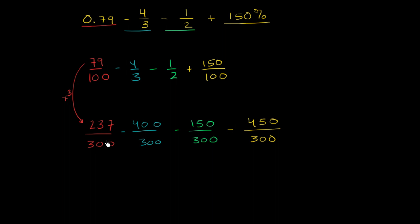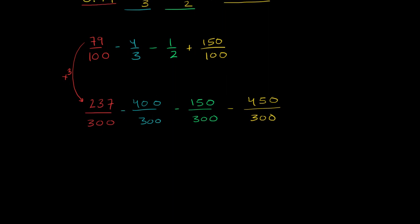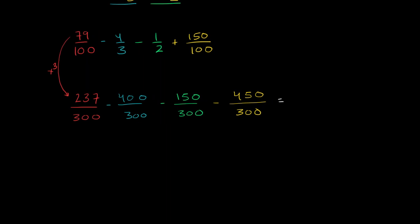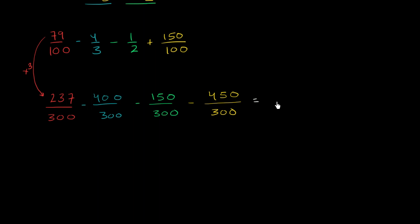So now we have the same denominator, and we can now add our numerator. So this is going to be equal to, this is going to be equal to, actually, I could just do it right over here on the right-hand side. This is going to be equal to some stuff over 300. So it's going to be 237 minus 400 and minus 150. And this actually should be a plus right over here. This should be plus 450, plus 450.